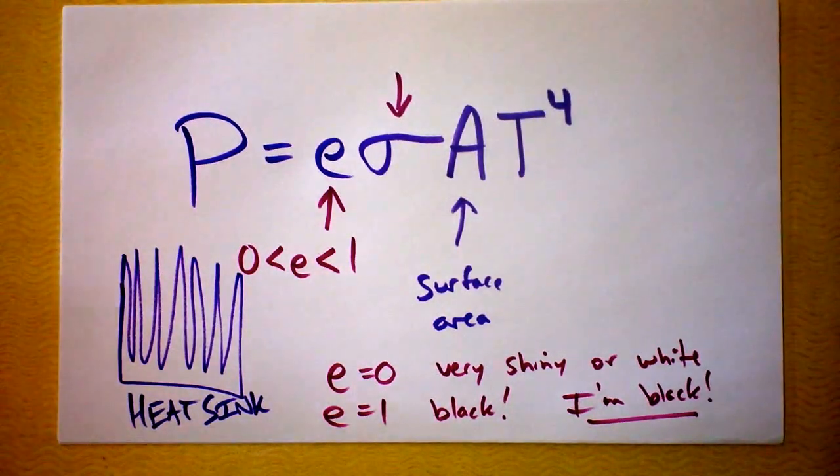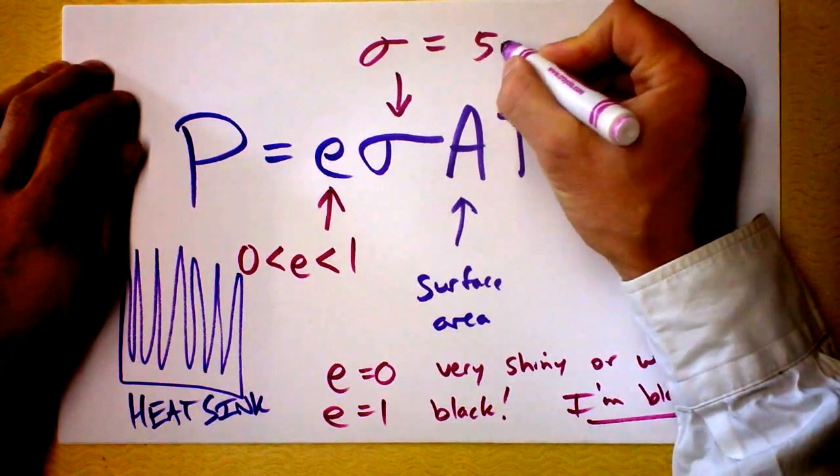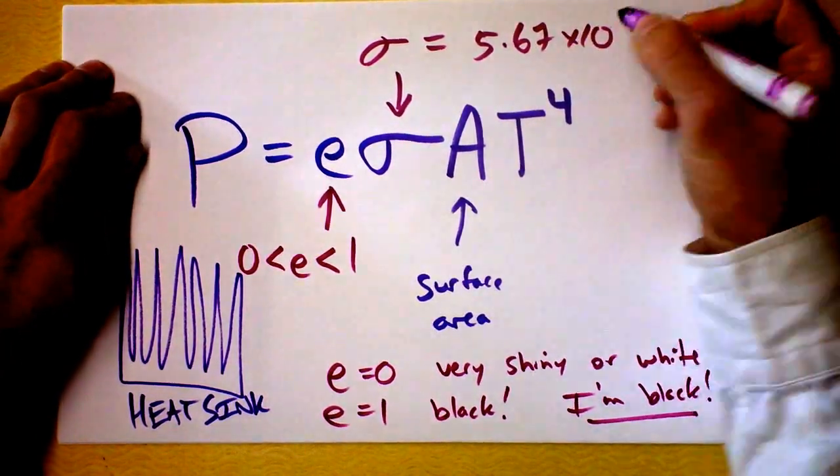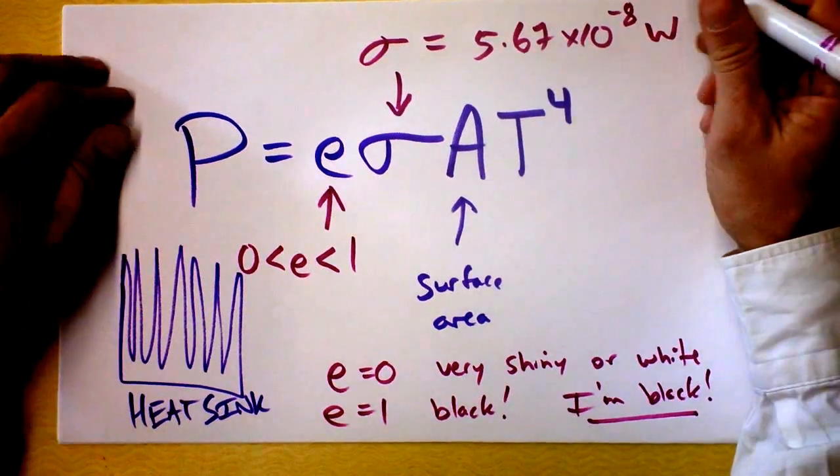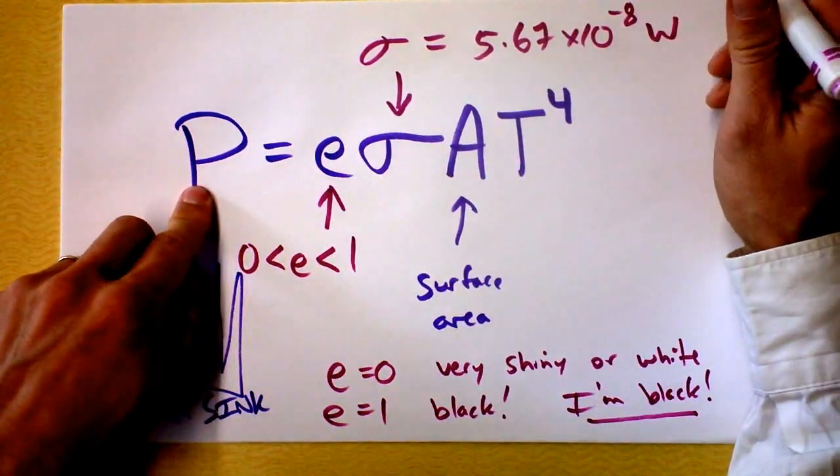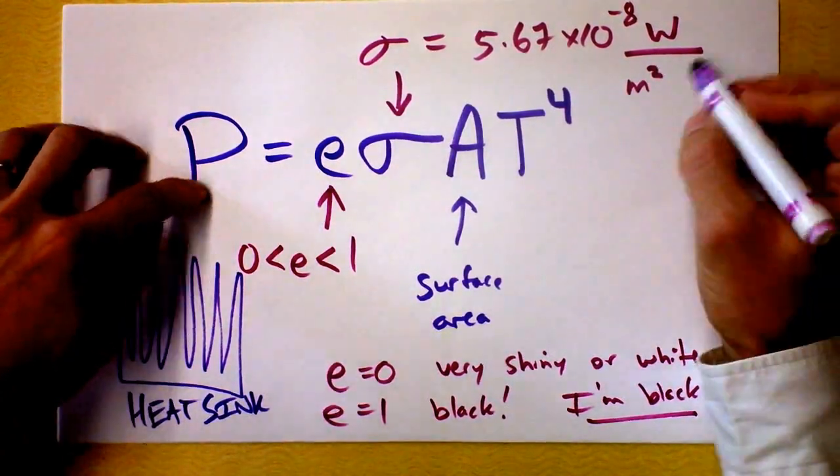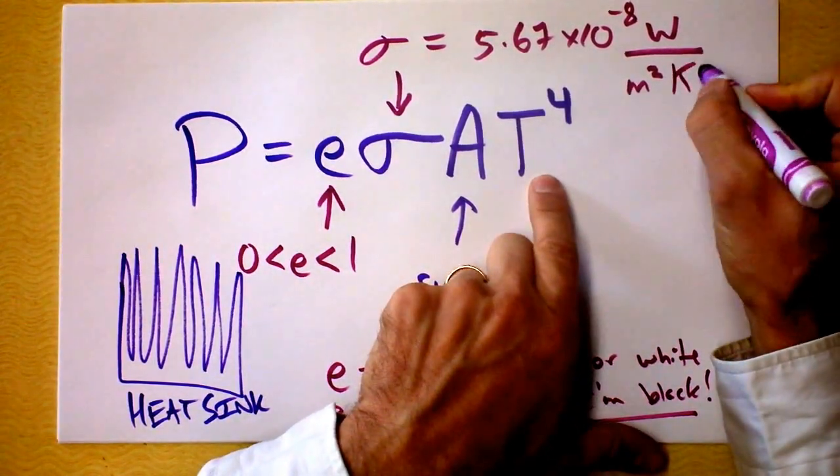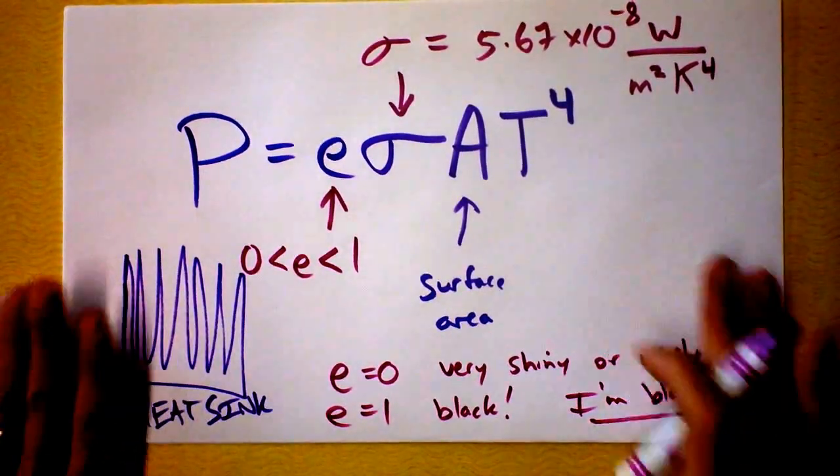And sigma, it's just a constant. What do you want? You want sigma? Here it is. Sigma is 5.67 times 10 to the negative 8th. And it's got units. I guess it's going to be watts because that's the unit of power. And then we have to divide by the units of area. And we have to divide by the units of temperature to the 4th. Dang. Okay. So we're going to play with this law a little bit too. Goodbye.